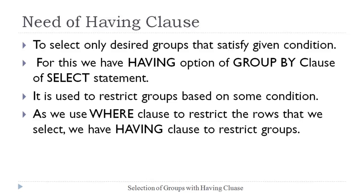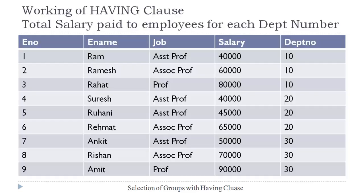It is important to note that the WHERE clause of the SELECT statement is used to select desired records, while the HAVING clause is used to select desired groups. Let's understand this operation with the help of an employee database.